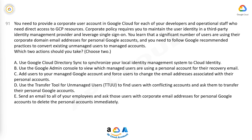Which two actions should you take? A. Use Google Cloud Directory Sync to synchronize your local identity management system to Cloud Identity. B. Use the Google Admin Console to view which managed users are using a personal account for their recovery email. C. Add users to your managed Google account and force users to change the email addresses associated with their personal accounts. D. Use the Transfer Tool for Unmanaged Users to find users with conflicting accounts and ask them to transfer their personal Google accounts. E. Send an email to all of your employees and ask those users with corporate email addresses for personal Google accounts to delete the personal accounts immediately.